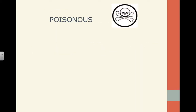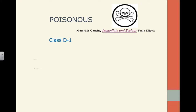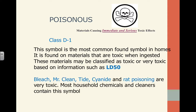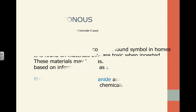Then we have poisonous — the most common symbol found in homes, present in many materials you probably find under your sink or in your cleaning closet. If we ingest these materials, they can be immediately toxic, very lethal, and extremely dangerous. Examples include Mr. Clean, bleach, Tide, cyanide, and rat poisoning. We find these materials in our households all the time, so poisonous is something to be extremely careful about.